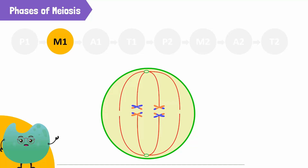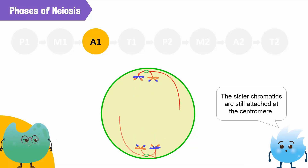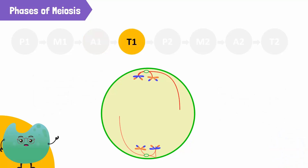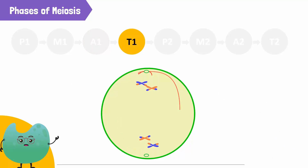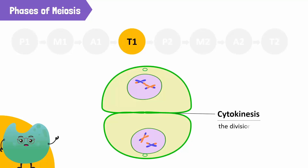In metaphase I, the chromosomes align at the center of the cell. The spindle fibers attach to one chromosome of each pair. The next phase is anaphase I. During this phase, the homologous chromosomes separate and start moving to opposite poles of the cell. The sister chromatids are still attached at the centromere and stay attached by the centromere throughout meiosis I. The final step is telophase I. In this phase, the spindle fibers start to break down. The nuclear membrane reappears, and finally the cell divides into two daughter cells after cytokinesis. Cytokinesis is the division of the cytoplasm.